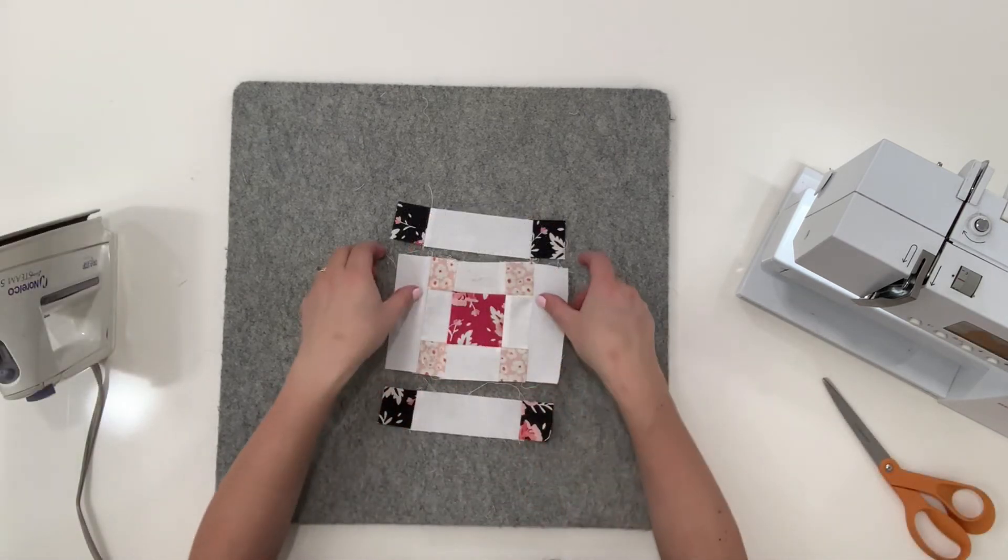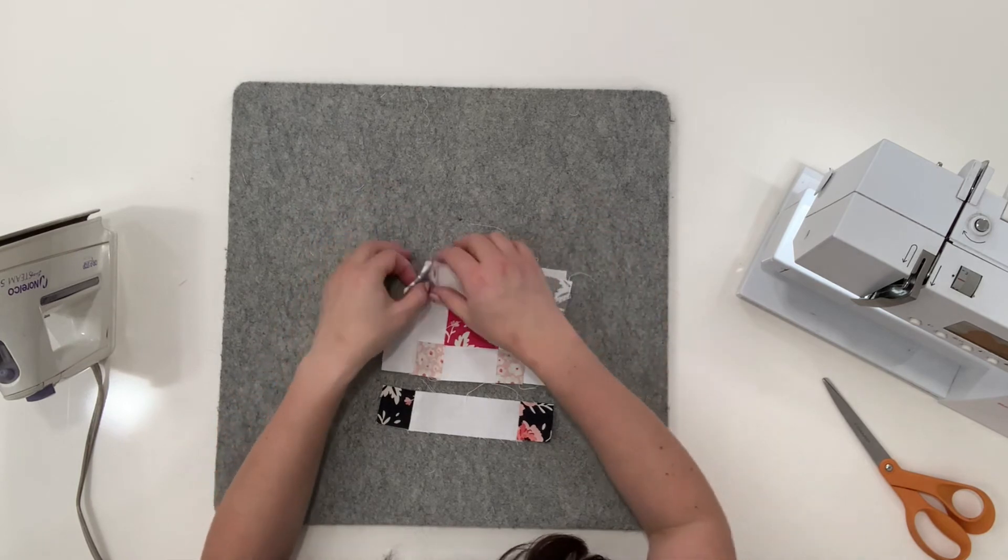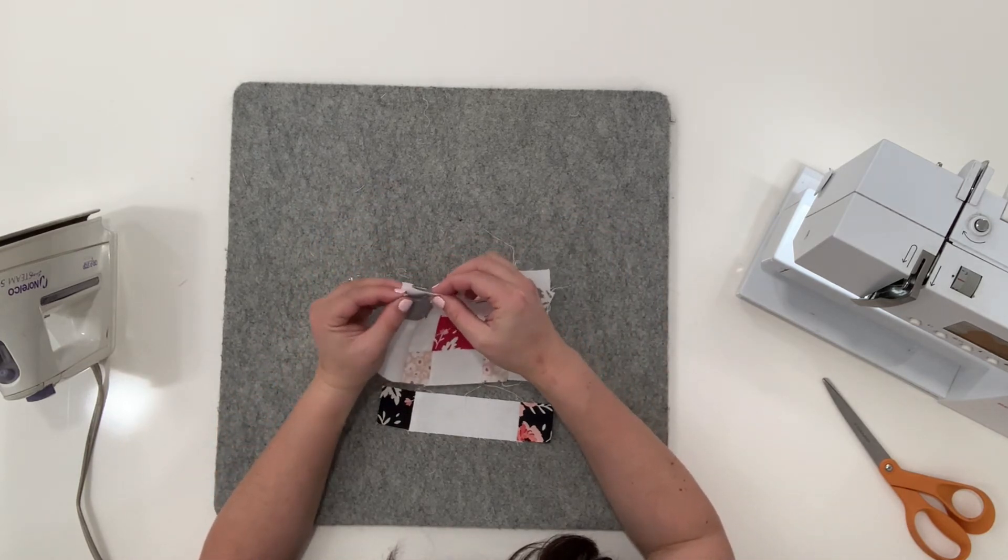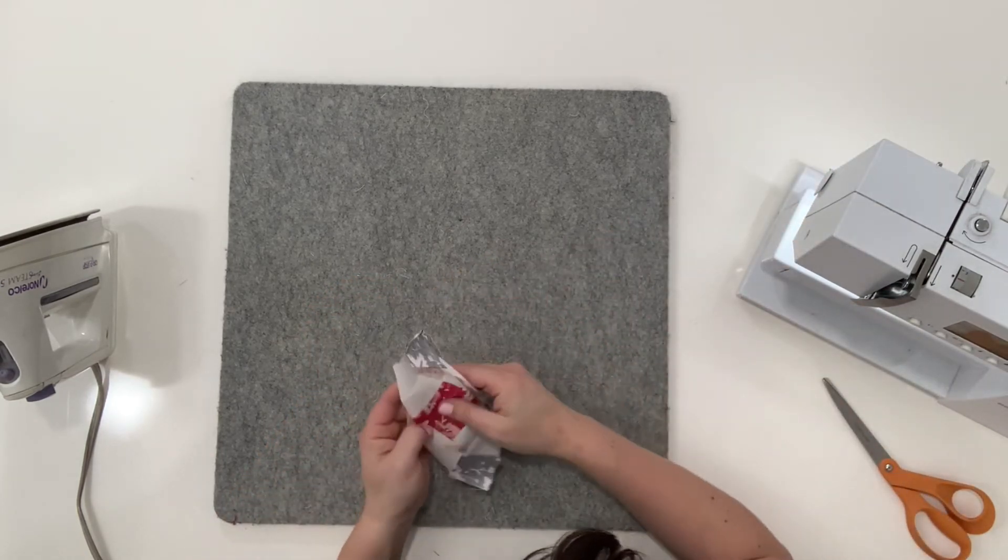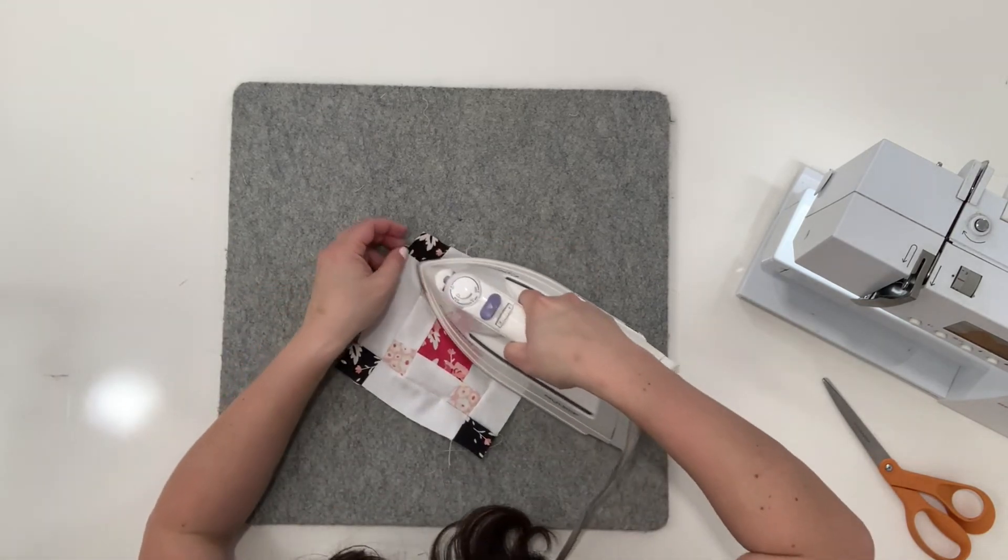Okay, final bit here and you can see everything's lined up pretty nicely. Check for those nested seams, and that's just going to help with the bulk because there are lots of tiny pieces here. Okay, final pressing and this block is done.